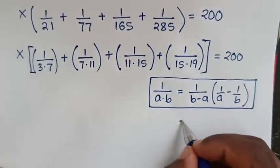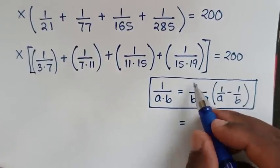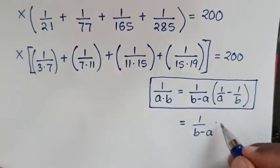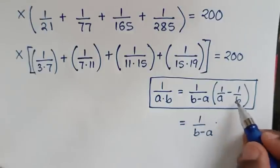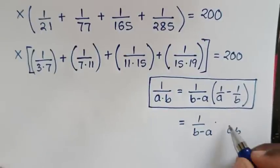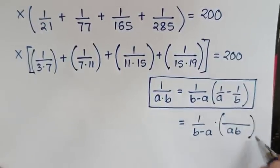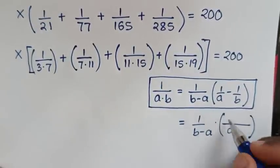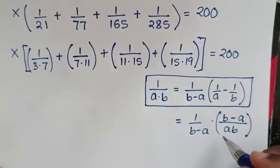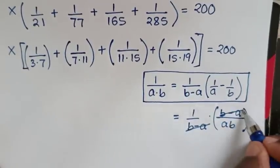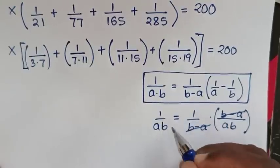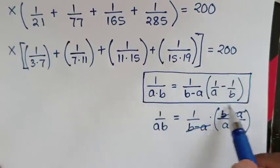Why do we apply this rule? Because 1 over (b minus a) times (1/a minus 1/b): the common denominator of 1/a and 1/b is a times b, so it becomes (b minus a) over ab, divided by (b minus a), which equals 1 over ab. So the rule is verified: 1 over ab equals 1 over (b minus a) times (1/a minus 1/b).